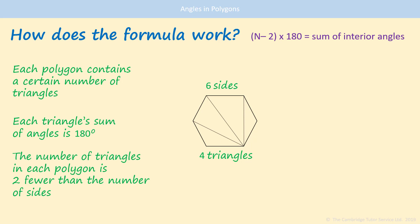So that's why we use the formula, the number of sides take away 2, then times it by 180, because that's how many degrees there are in each of the triangles.